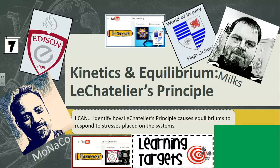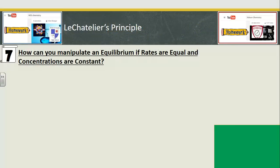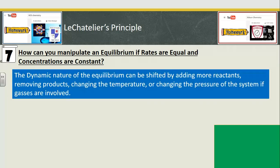While equilibriums are cycles, they can be manipulated to favor one side or the other because they're dynamic. You can have one side of your reaction have more concentration than the other — it's just that the rate of forward and reverse has to be the same all the time. You can shift it by changing temperature, pressure, and concentration by adding or removing products. This will cause the equilibrium to shift in favor of one side or the other. The cycle is not broken; it has just been shifted towards one side or the other.